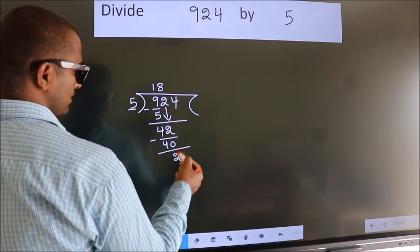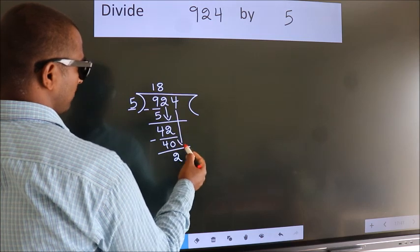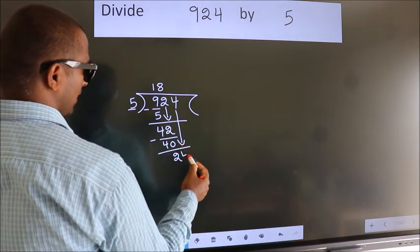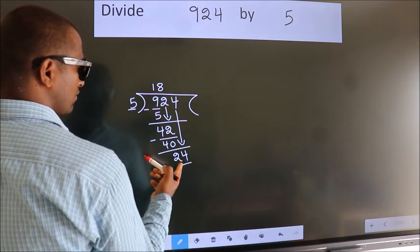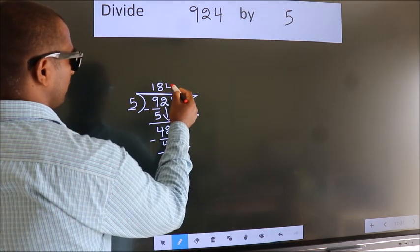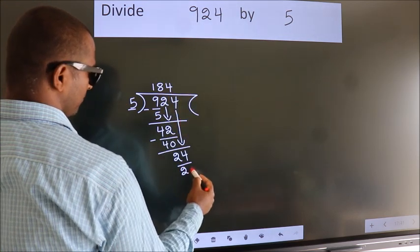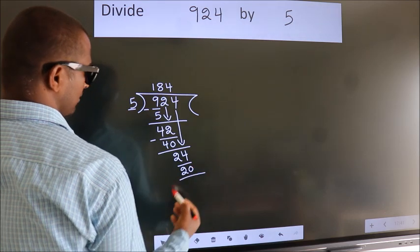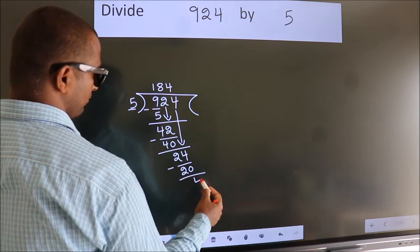After this, bring down the beside number. So, 4 down. So, 24. A number close to 24 in the 5 table is 5 fours, 20. Now, we subtract. We get 4.